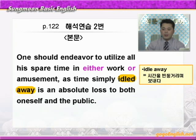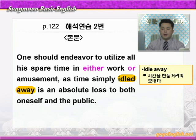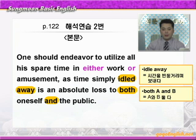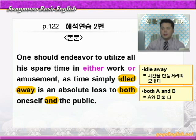무엇에 대한 절대적인 손실입니까? 'to both oneself and the public.' both와 and에 동그라미 쳐보면, 'both A and B' 하면 'A와 B 둘 다' 이런 뜻이죠. 여기 public은 사회 이런 뜻이니까 자기 자신과 사회 양쪽 다의 절대적인 손실이기 때문이다. 정리해 보면, 사람은 자기의 모든 여가 시간을 일이나 오락 둘 중 어느 하나에 이용하도록 노력해야 한다. 왜냐하면 단순히 낭비된 시간은 자기 자신과 사회 양쪽 다의 절대적인 손실이기 때문이다.